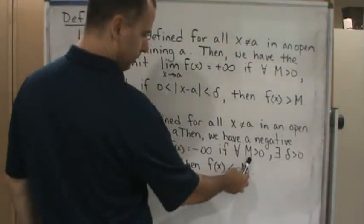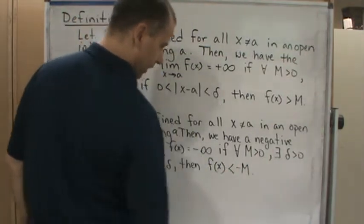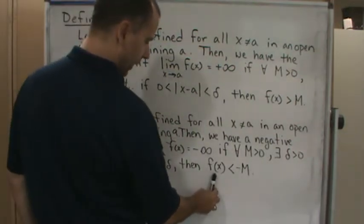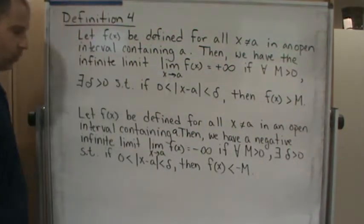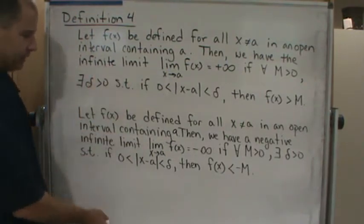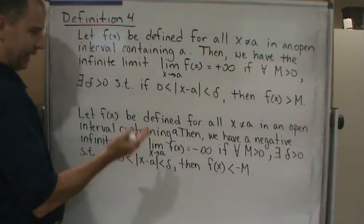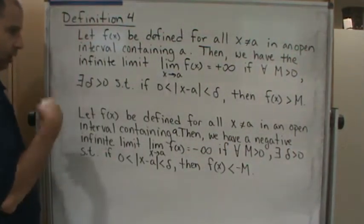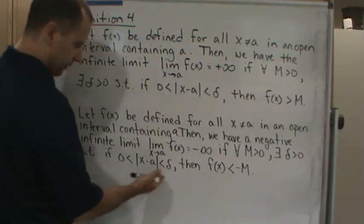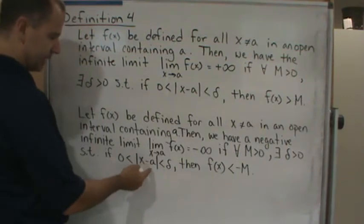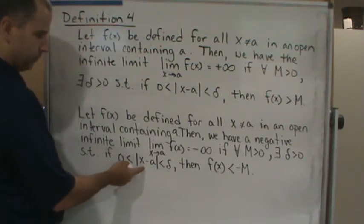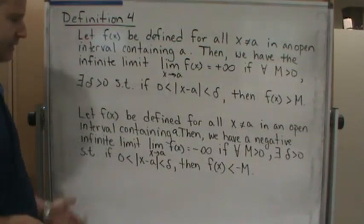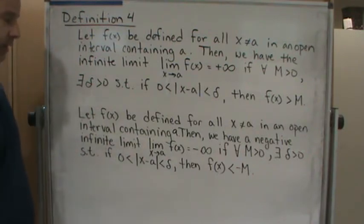If for all M greater than zero, there exists delta greater than zero such that if this is true, then f(x) will be less than negative M. What is this saying? Very similar to the previous one. This is saying that for any positive real M we choose, there exists delta such that if we are less than delta away from a, then f(x) will be less than negative M. This is saying that the function is decreasing without bound.